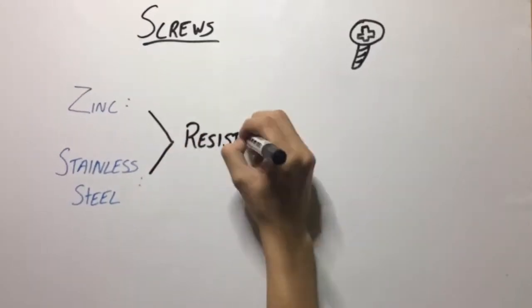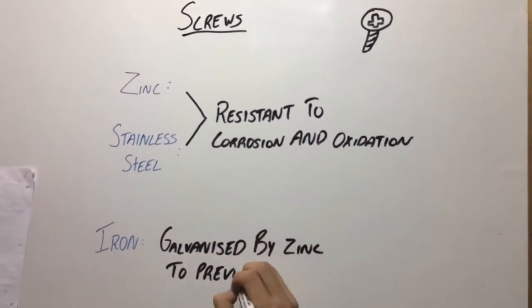Screws: the material used for screws is either zinc, stainless steel, or iron.